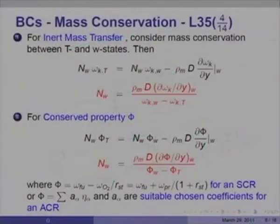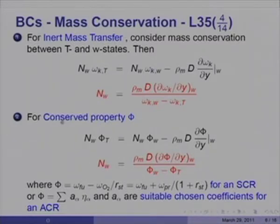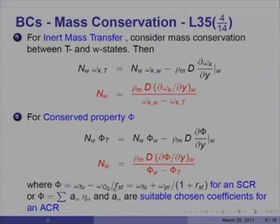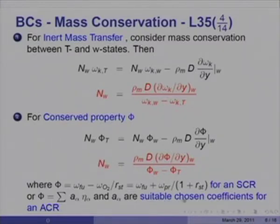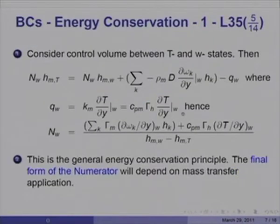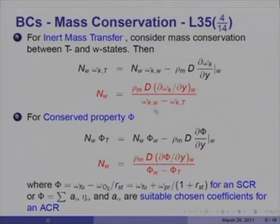Rearranging and taking Nw common, I get Nw equal to ρ_m D (dω_k/dy at wall) divided by (ω_k W minus ω_k T). Likewise, for any other conserved property φ, the same equation gives Nw equal to ρ_m D (dφ/dy at W) divided by (φ_W minus φ_T), where φ could be ω_Fu minus ω_O2 divided by RST, or other linear combinations of η_α with suitably chosen A_α coefficients. These are the boundary conditions derived from the mass conservation principle.